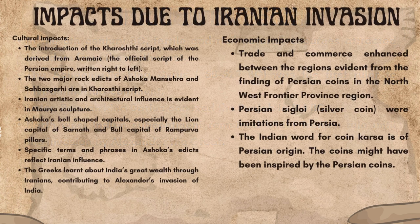Now let us look at the impacts due to the Iranian invasion, starting from cultural impacts. The introduction of the Kharoshti script, which was derived from Aramaic — the official script of the Persian Empire — written right to left. The two major rock edicts of Ashoka, Mansera and Shahbazgarhi, are in Kharoshti script.